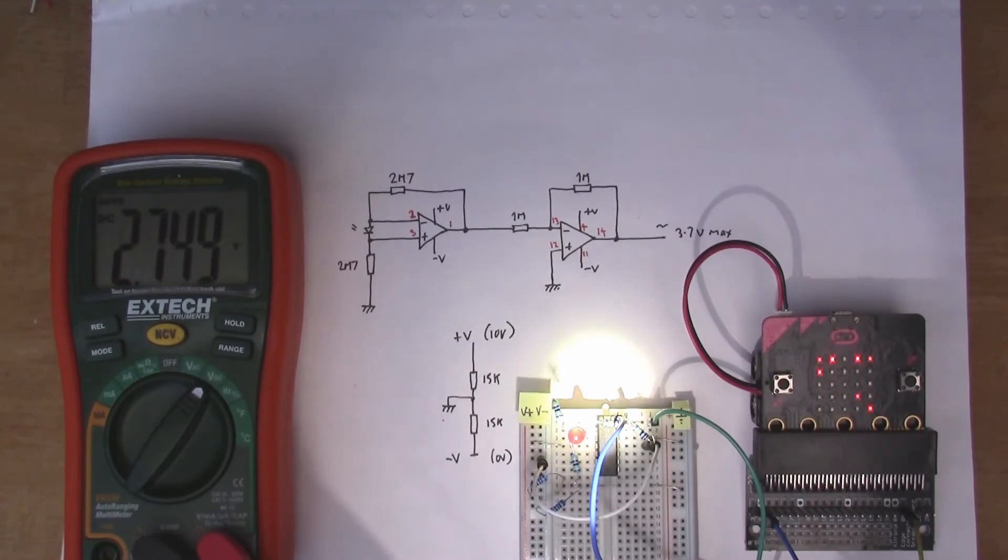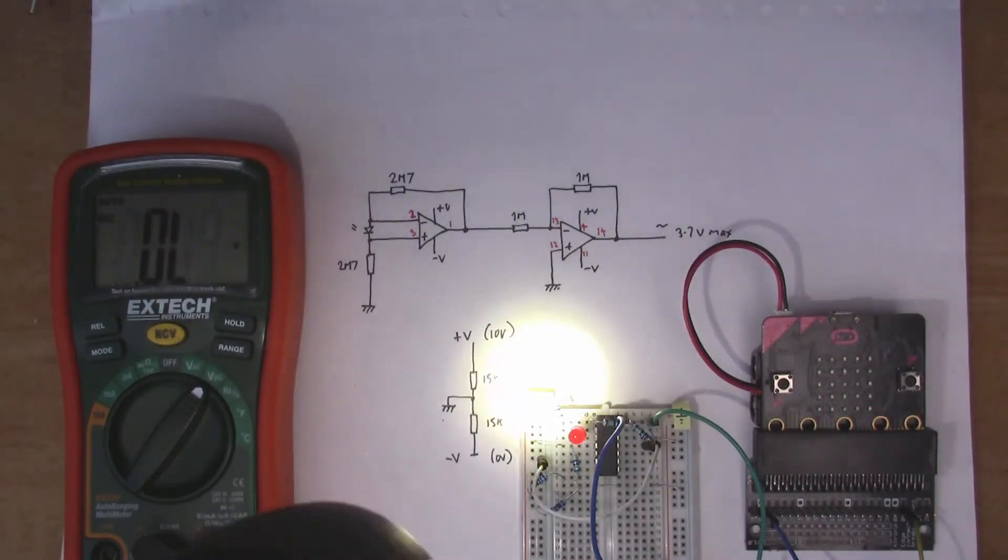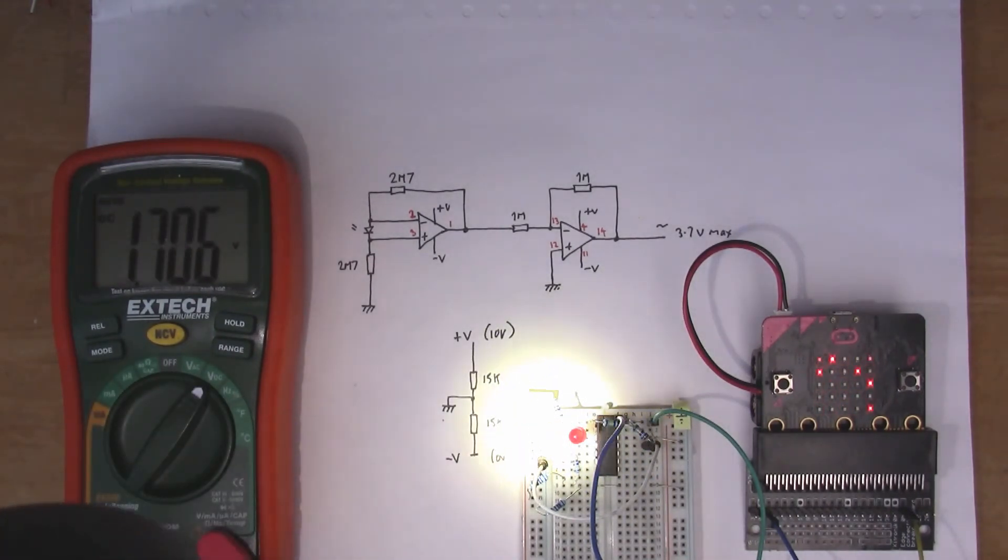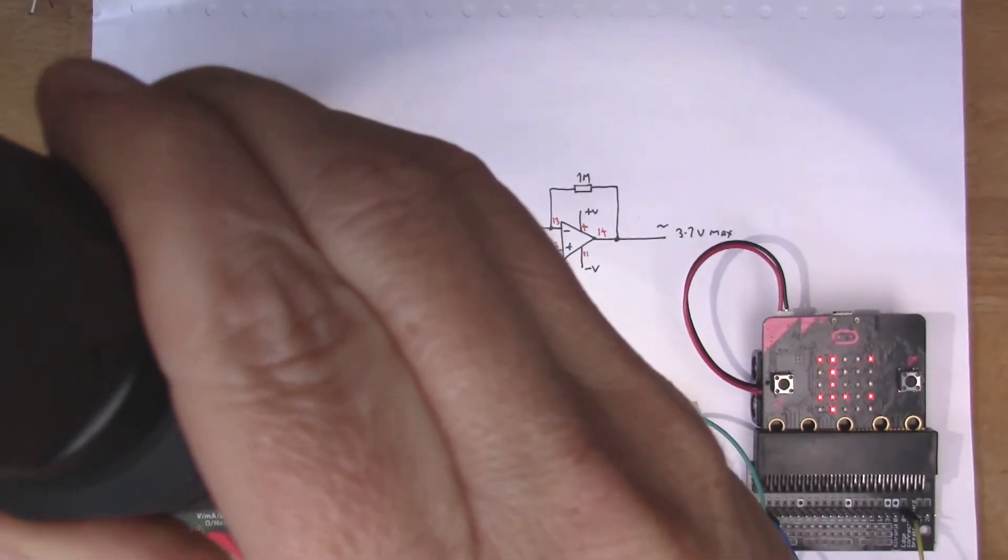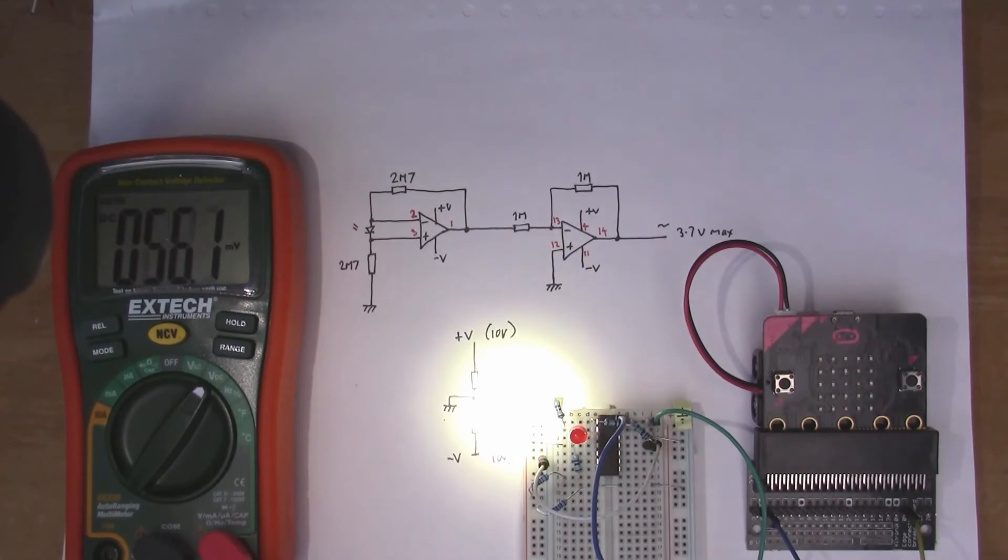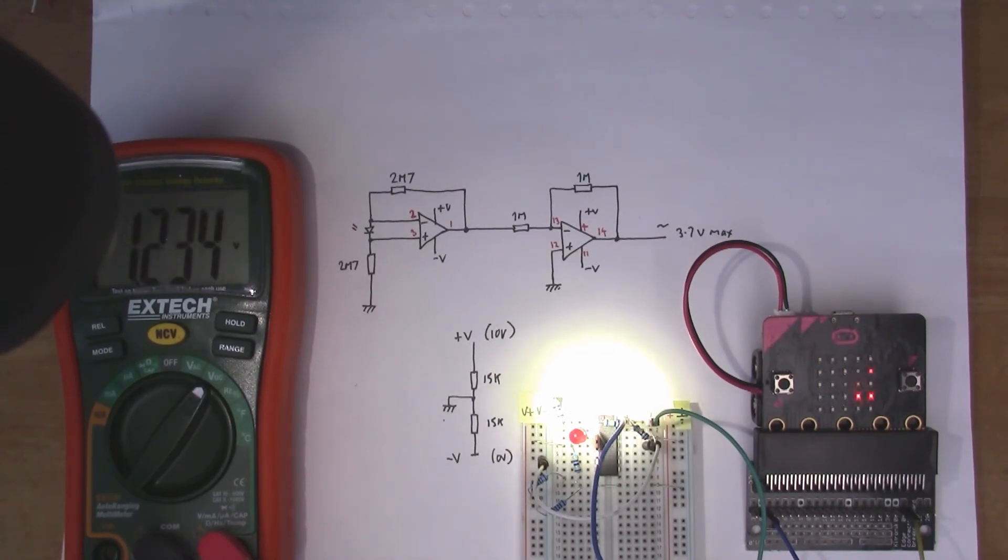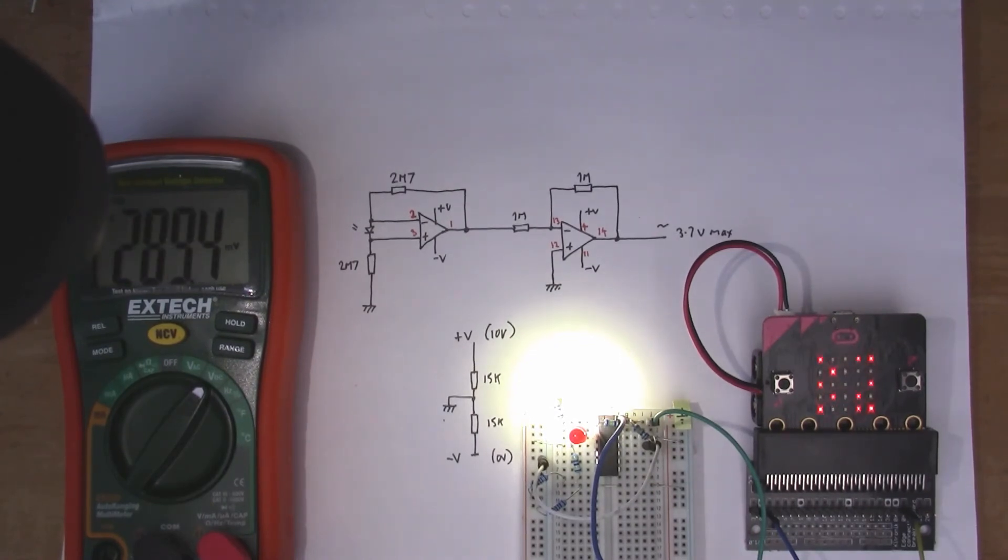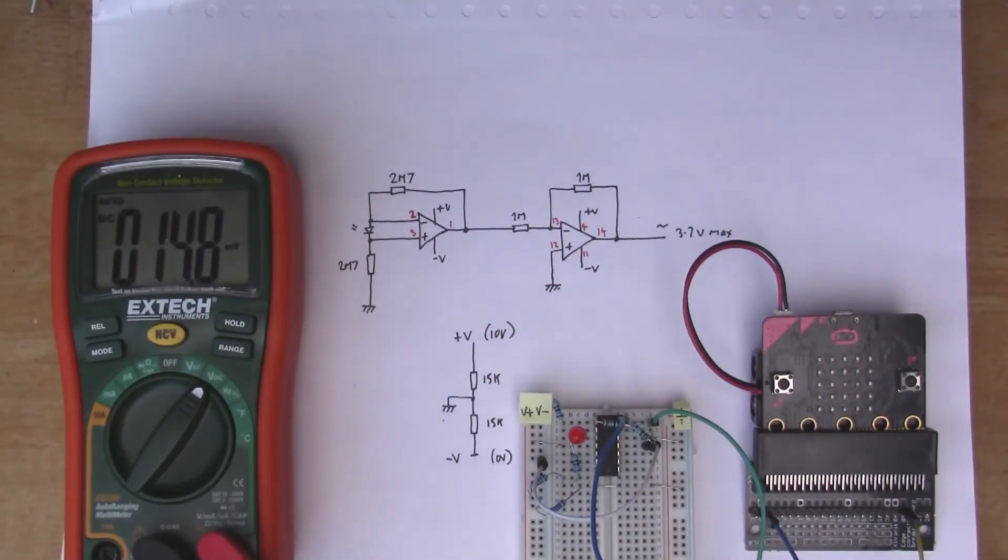968, that's fairly close to the maximum which is 1023. If I take the torch a little bit further away, I'm getting around 2 volts on the meter. Getting about 1 volt on the meter and 414 on the micro:bit, so a bit less than halfway up on the micro:bit scale.